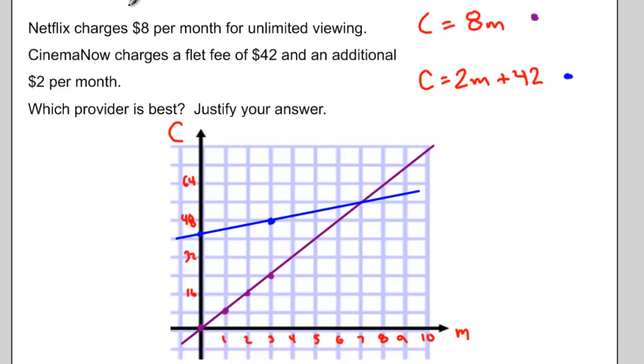And once again, we're looking for the point where the two graphs are crossing. And it looks like that point is at seven months when you're paying $56.